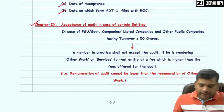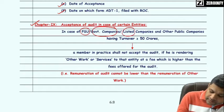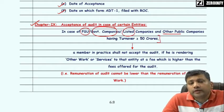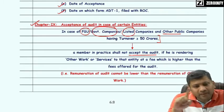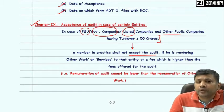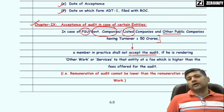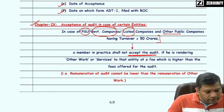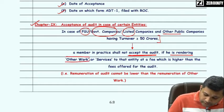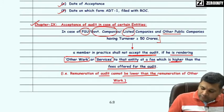Chapter 9: Acceptance of audit in case of certain entities — in case of public sector undertakings, government companies, listed companies, and other public companies having turnover of 50 crore or more in a year, the practicing CA shall not accept the audit if he is rendering management consultancy or other services in the same company and the fees offered for the audit is less than the fees for the other work. Audit fees should be higher than the fees of management consultancy and other services; remuneration of audit cannot be lower than the remuneration of other work.